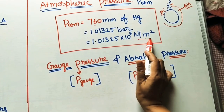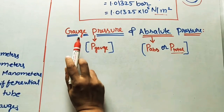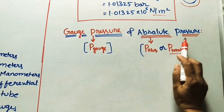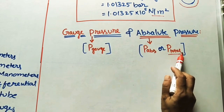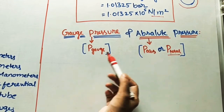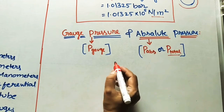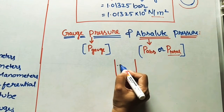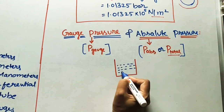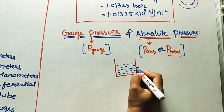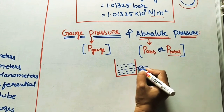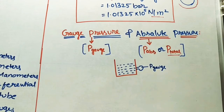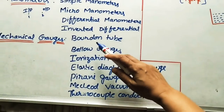The symbol for gauge pressure is P_gauge and for absolute pressure it is P_absolute, also called P_total. To avoid confusion between these, consider a liquid in a container. If we connect a gauge to it, whatever value the gauge gives is called P_gauge — gauge pressure. We can use mechanical gauges or manometers to get this value.